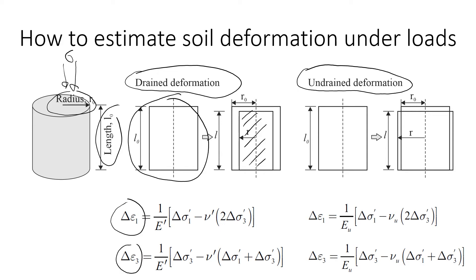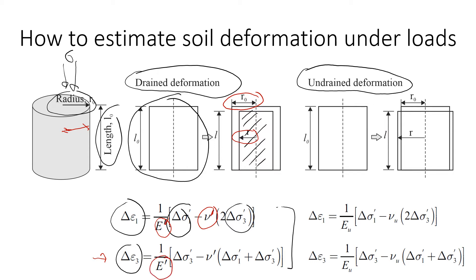To estimate the principal deformation in the vertical and horizontal directions, we use these two equations. We need to know changes in the principal stresses sigma 1 and sigma 3, as well as Young's modulus and Poisson's ratio. These are assumed for drained conditions — indicated by the dash notation. For radial deformation, we use drained values of Young's modulus and Poisson's ratio, which will range from 0.2 to 0.3.